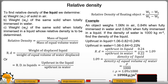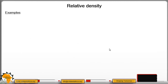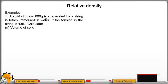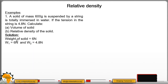Next example: A solid of mass 600 g is suspended by a string and totally immersed in water. The tension in the string is 4.8 N. Calculate the volume of the solid and its relative density. Mass is 600 g, so weight W1 in air equals 0.6 kg × 10 = 6 N. Weight W2 in water (tension) equals 4.8 N. Upthrust equals 6 minus 4.8 equals 1.2 N.